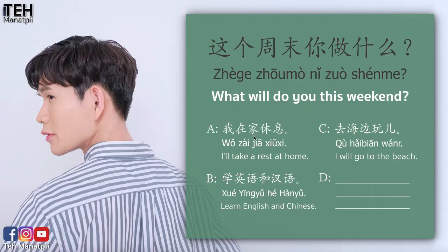เรามาดูตัวเลือก ก. ใจจะชิ้วสิ — I'll take a rest at home. ก็คือฉันจะพักอยู่ที่บ้าน ไม่ไปไหน ชิ้วสิ ออกเสียงเบา แปลว่า take a rest หรือ have a rest คือฉันจะนอนพักผ่อนอยู่ที่บ้านประมาณนี้